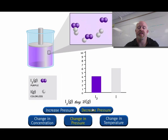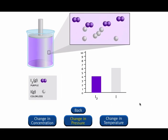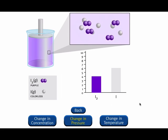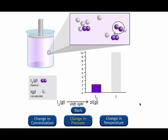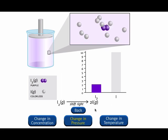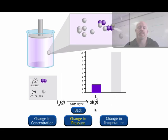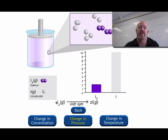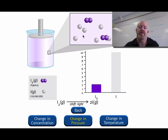The exact opposite happens if we decrease pressure. You have decreased the pressure by increasing the volume of the container. The system can partially offset this stress by increasing the moles of gas. Because of the 2-to-1 mole ratio, more moles of gas can be produced if the system shifts to the right, producing more iodine atoms (colorless). The color of the equilibrium mixture lightens, and the total number of gas particles increases from 10 to 12. So because we decreased pressure, we shift from the small number of moles to the bigger number of moles.